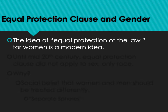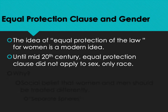The idea of equal protection of the law is a modern idea. The 14th Amendment wasn't added to the Constitution until 1865, so there wasn't really a broad national understanding of equal protection. And even after it was added, it was not seen as applying to gender inequality. Until the mid-20th century, the equal protection clause did not apply to sex — it only applied to race. Why was racial discrimination seen as a potential violation but differential treatment based on sex was not?